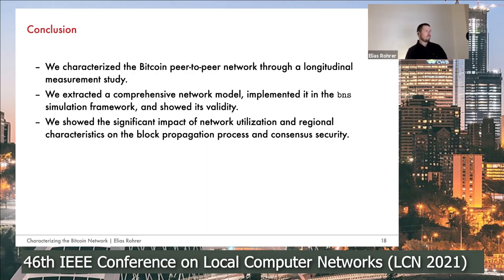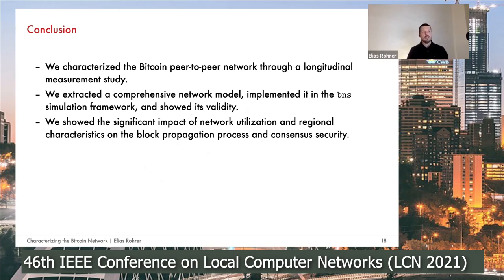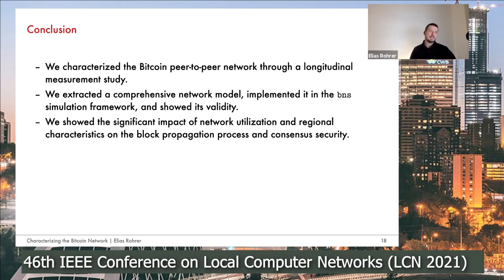To conclude, in our work we characterized the Bitcoin peer-to-peer network through a longitudinal measurement study comprehensively covering many network parameters in 2020. From this, we extracted a network model implemented in the BNS simulation framework and showed that this model has high validity. We demonstrated that network utilization and the regional characteristics of miners — that is, mining location — can have a significant impact on block propagation and consensus security overall.